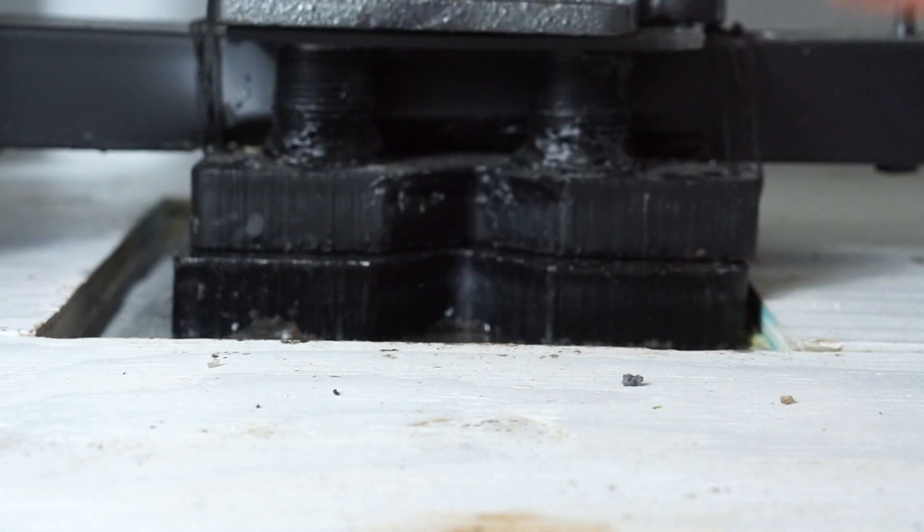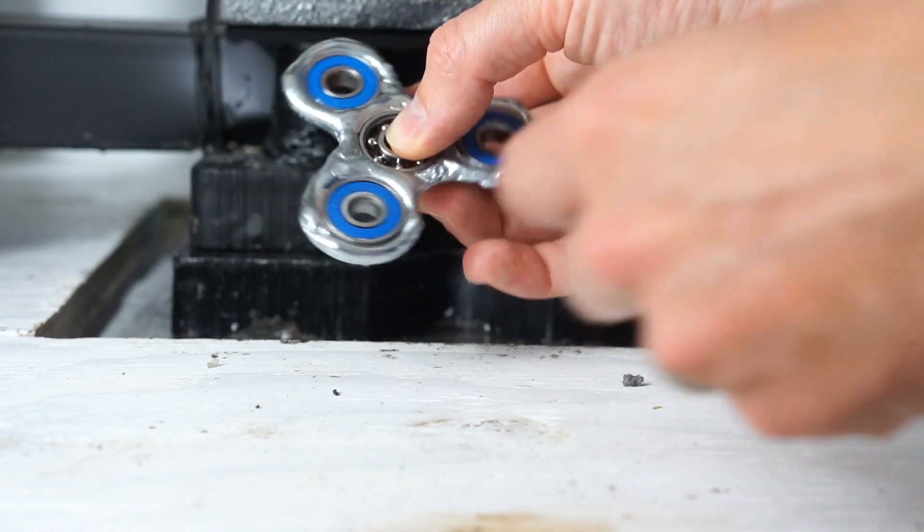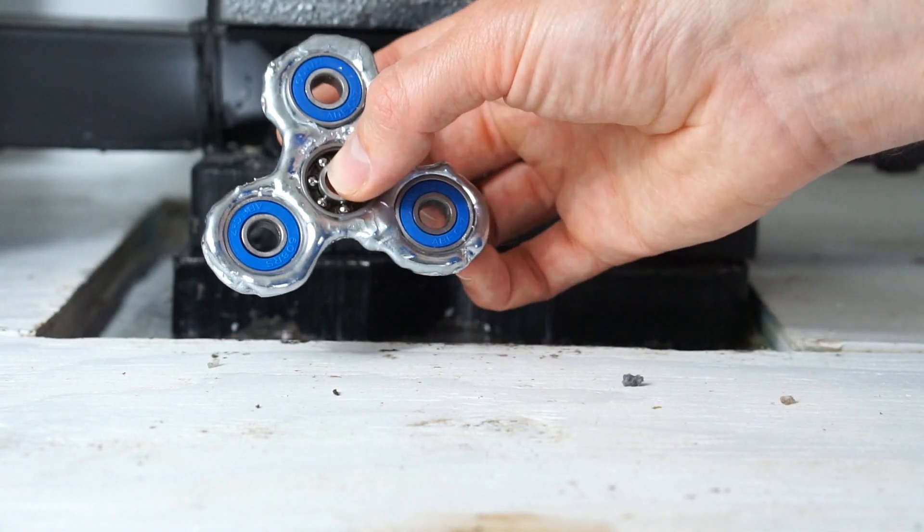Okay, today I'm going to be crushing a homemade liquid metal gallium fidget spinner in the hydraulic press and let's see if it melts in the hydraulic press. Pretty cool.